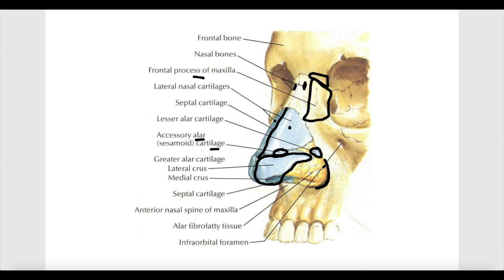On the alar, we have some fatty tissue referred to as the alar fiber fatty tissue. This concludes the first part of the nose, which is called the external nose.